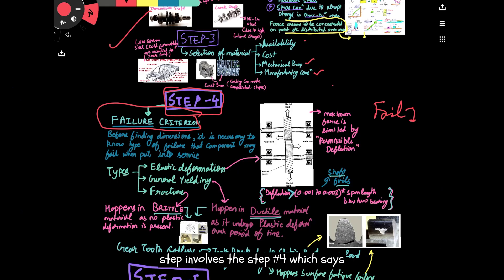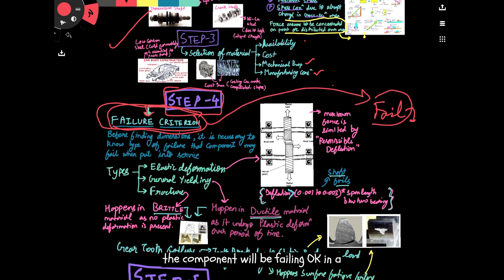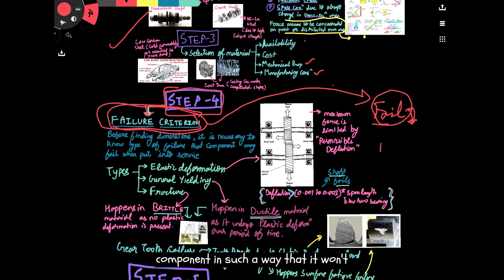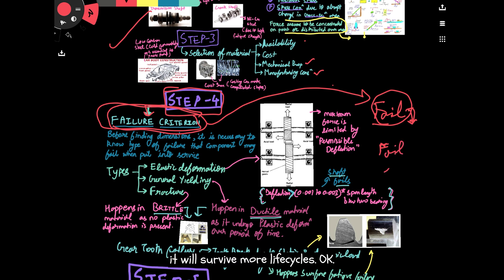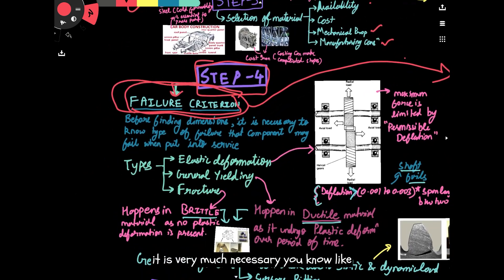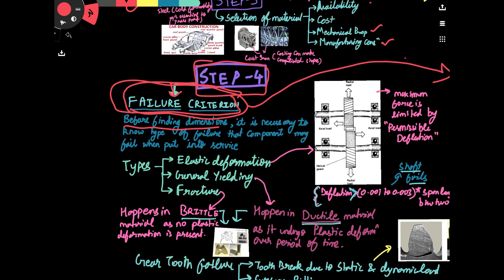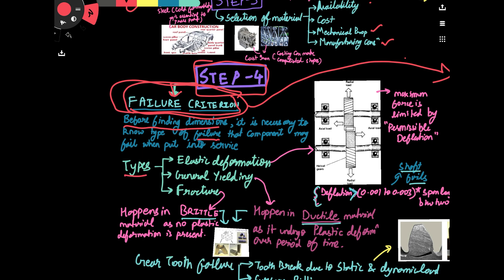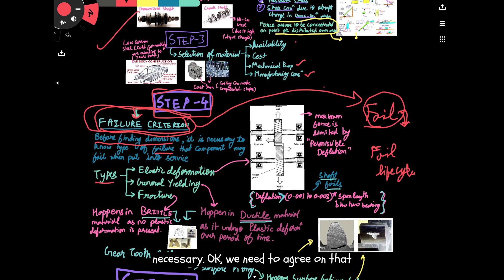Step number four is about failure criteria. It's very important that a designer should know why a component will be failing under a particular kind of loading. If you know that, you can design the component in such a way that it won't fail soon — it will survive more life cycles. Before finding the final dimensions, a person should know how the component is going to fail when subjected to a particular kind of loading.